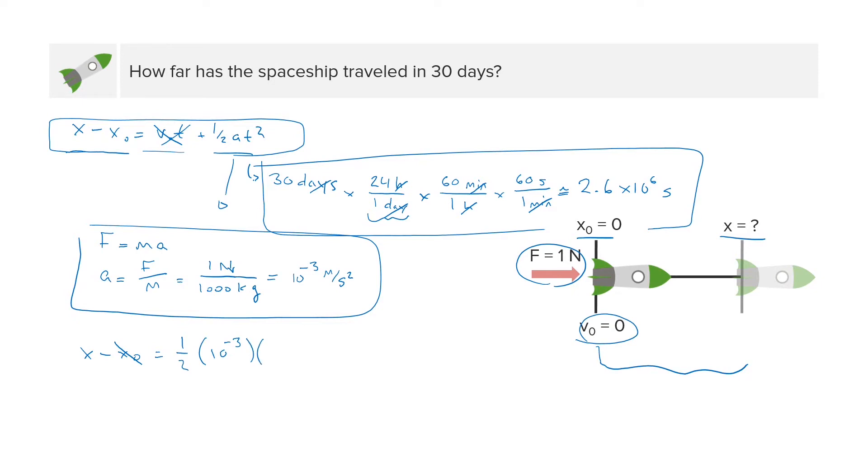times the time, which is this complicated expression, 2.6 times 10 to the sixth seconds squared. So we have to do one last thing here, which is to square this quantity, 2.6 times 10 to the sixth. So this is one half times 10 to the minus 3, and 2.6, when you square it,